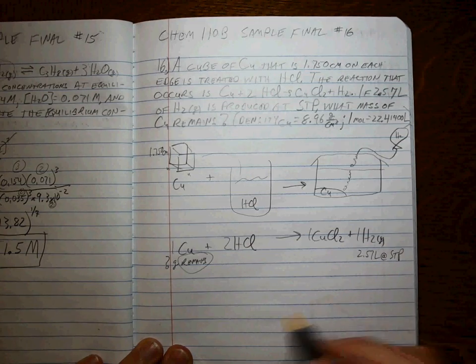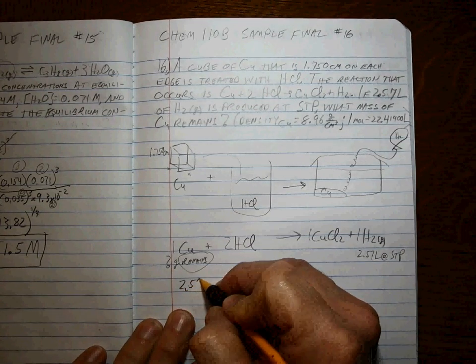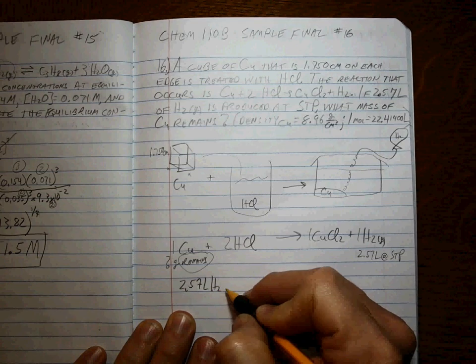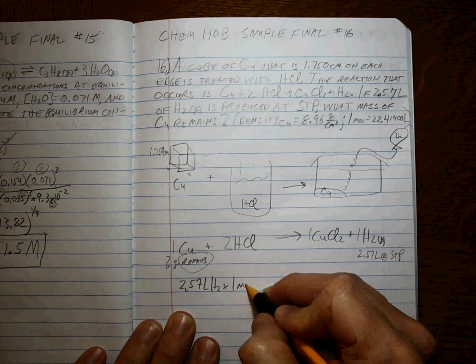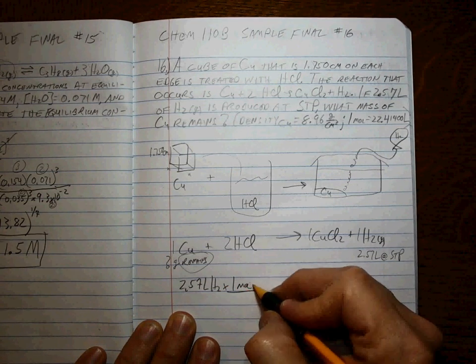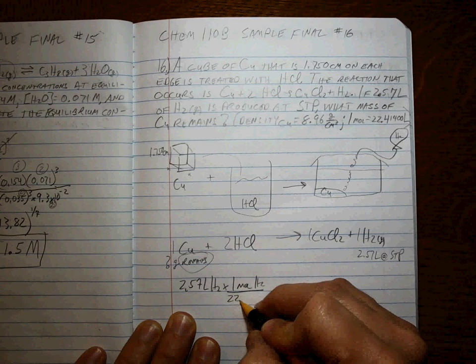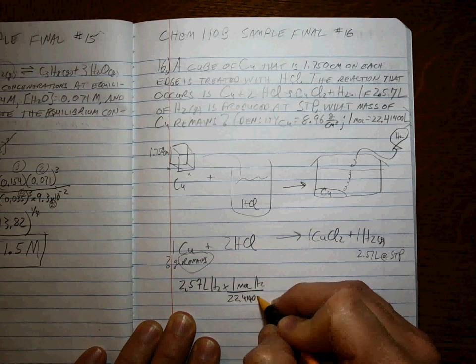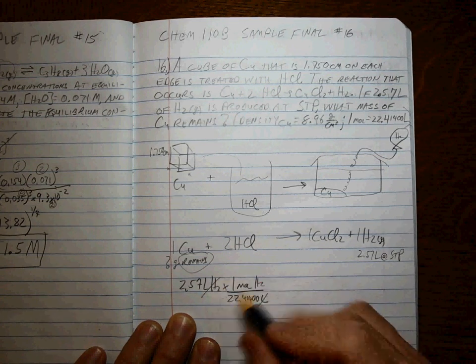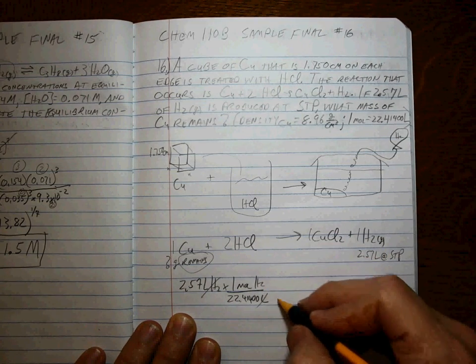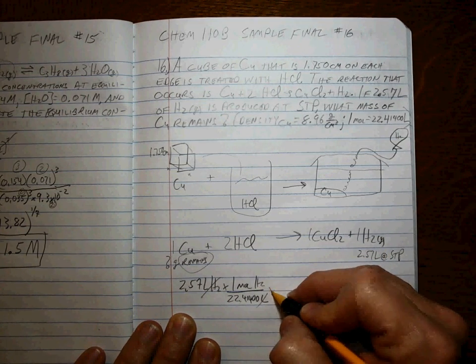So we need to be able to figure out how much we used, and that will allow us to figure out how much is left. First step: 2.57 liters of H2 gas at STP. You remember how that goes. 22.41400 liters. There it is. That's STP. That gives us moles of H2.